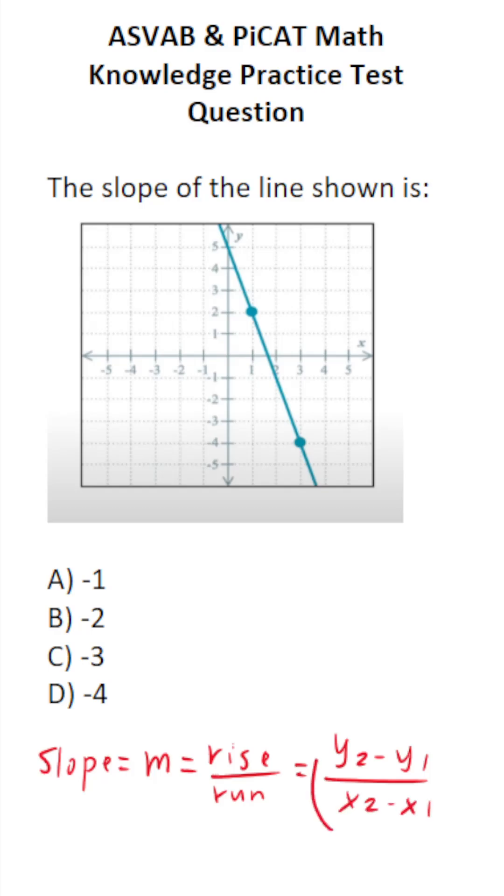You absolutely have to know this formula for the ASVAB. And in fact, if you got the values of these ordered pairs, you can plug them into this formula and calculate slope.